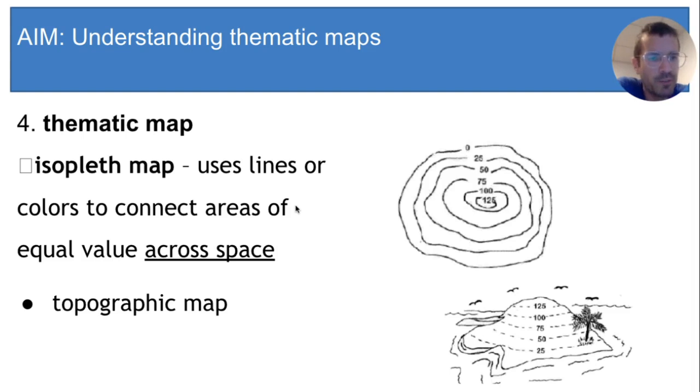Here's a special kind of isopleth map called a topographic map. Topographic maps show elevation of land. Similar to the previous map, this map draws a line through every point in space with the same elevation. I'm not going to spend time going over how to read these maps, but this particular map here is describing a landform that looks like this little island. See if you can figure out how that works.